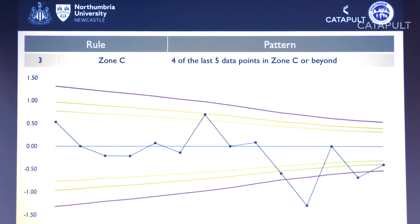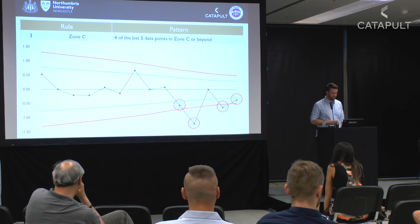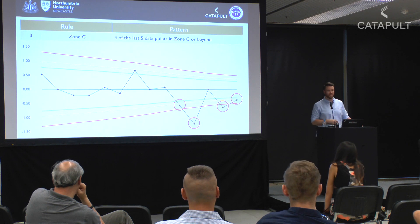Rule 3: four out of the last five data points beyond zone C — very small changes in training load but over a sustained period worth investigating. Note this example is on a downward trend, which might actually be a planned deload that we can confirm is working. The system doesn't only highlight errors; it confirms the plan is working.